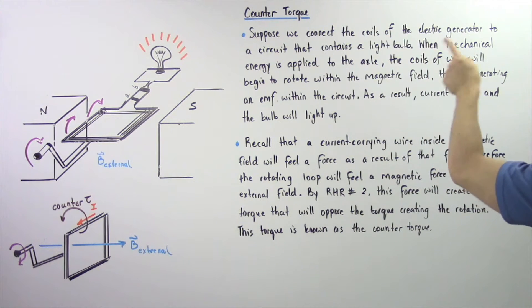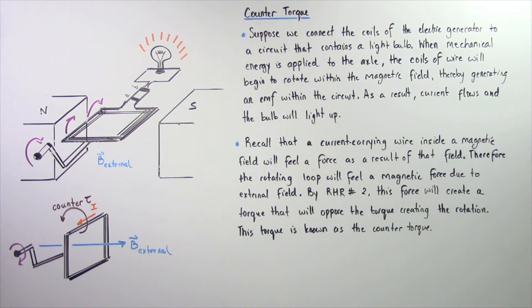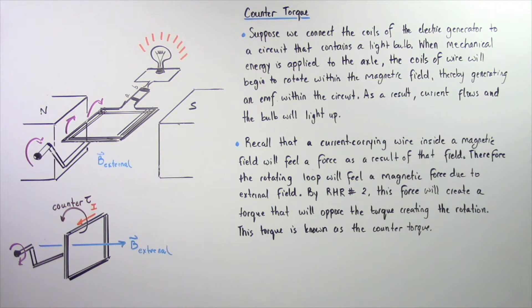When mechanical energy is applied to our axle, the coils of the wire will begin to rotate within our magnetic field, thereby generating an induced EMF within the circuit. As a result of this voltage difference, electric current will begin to flow and that will power our light bulb.